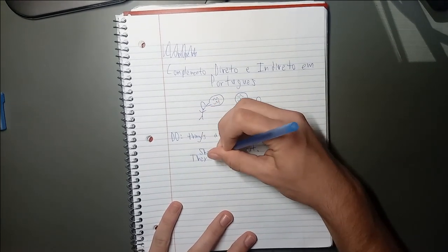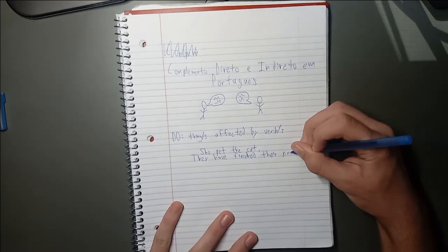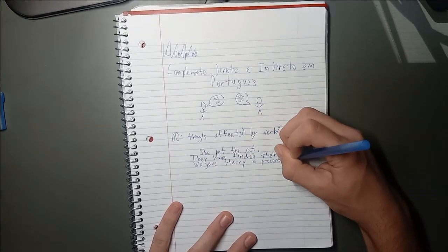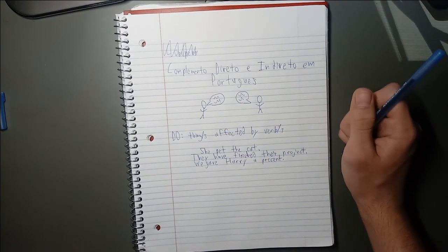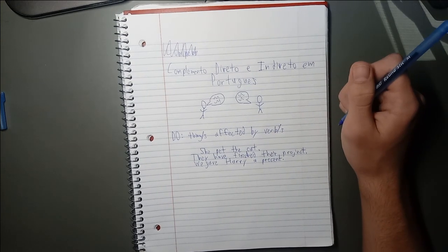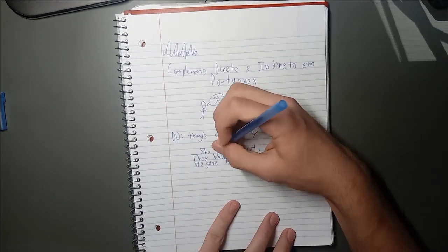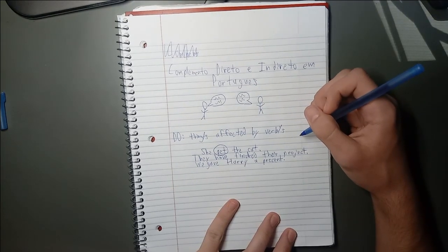She pet the cat. They have finished their project. We gave Harry a present. In the first sentence, the verb is pet. The direct object of the sentence will answer the question, who or what is being pet?